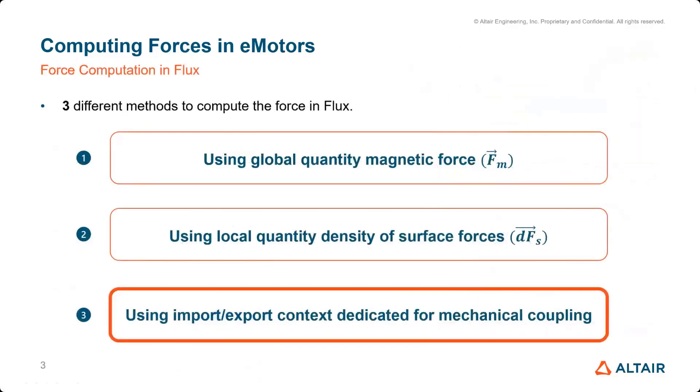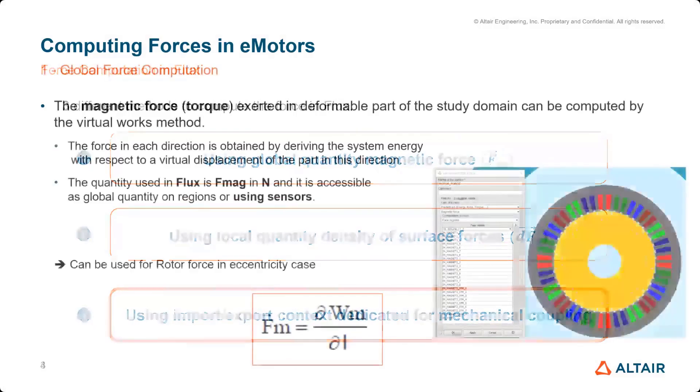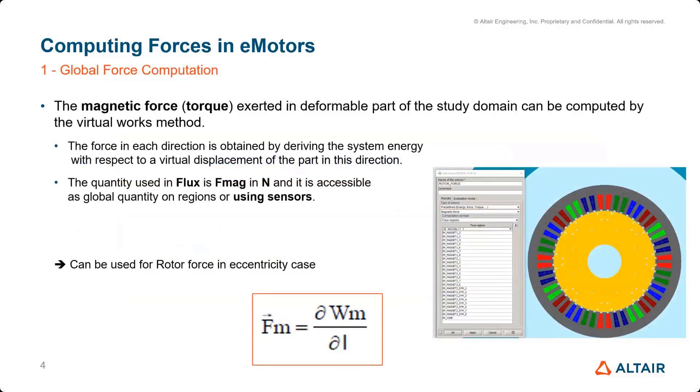And actually, in Flux in general, there are three ways to compute forces. So let's review them quickly. The first method is going to be a global method. This can be applied on any magnetic part surrounded by air region. And the easiest way to use it is through a sensor. So you can see an example here.